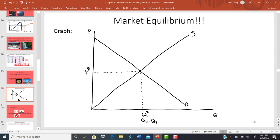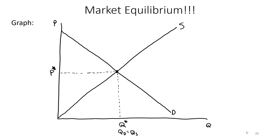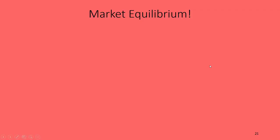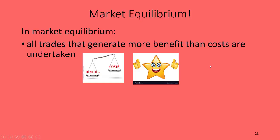That's market equilibrium — it's where supply and demand intersect, or where quantity demanded equals quantity supplied. With that in mind, let's go through some key characteristics of equilibrium that make it important for us as economists. First, in market equilibrium all trades that generate more benefit than cost are undertaken — every trade where the benefit to the buyer outweighs the cost to the seller.